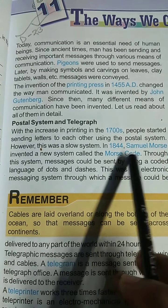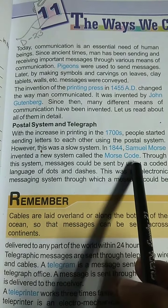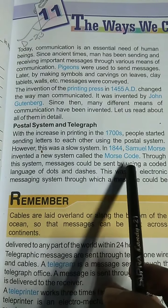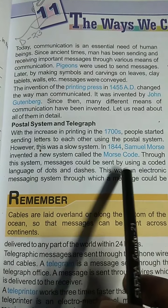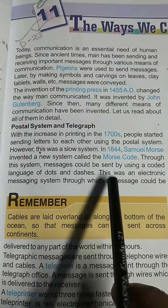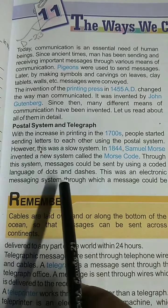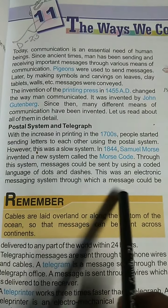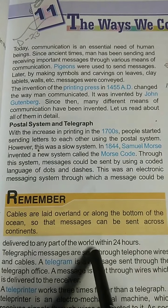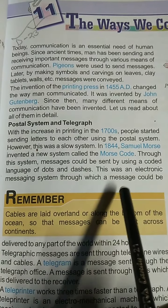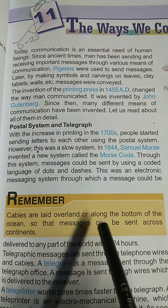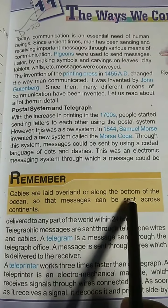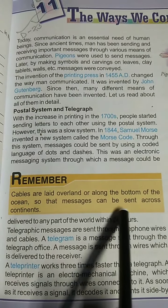In 1844, Samuel Morse invented a new system called the Morse code. Through this system, a message could be sent by using a coded language of dots and dashes. This was an electronic messaging system through which a message could be delivered to any part of the world within 24 hours.